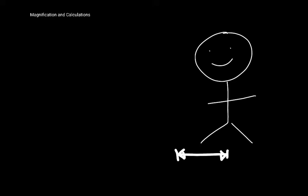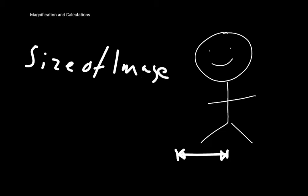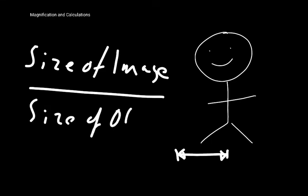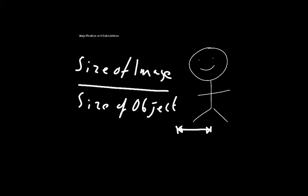Magnification is the number of times bigger that an image of a thing is compared to the actual size of the thing. So the size of the image divided by the size of the object equals the magnification. If you know two of these values — for example the magnification and the size of the image — you can derive the size of the object. If you know two, you can work out the third.